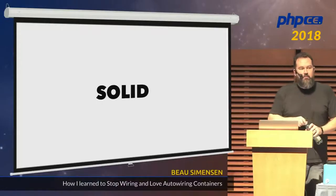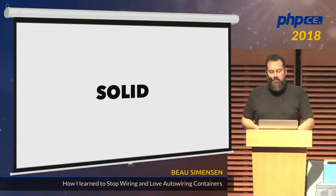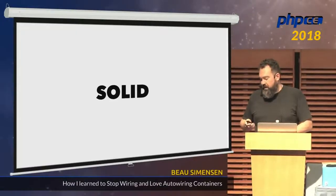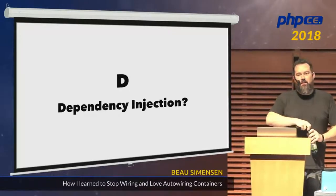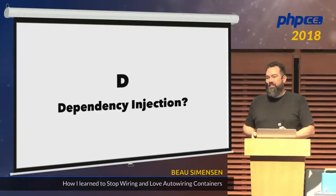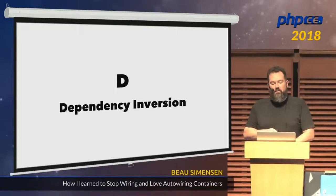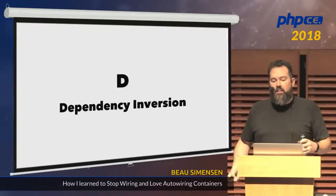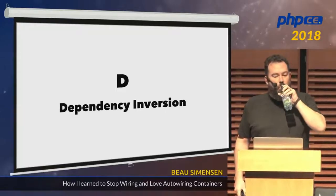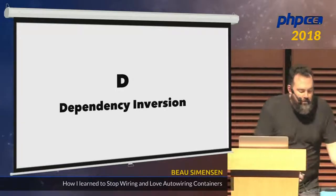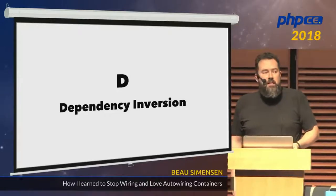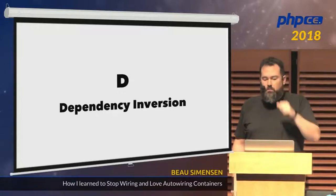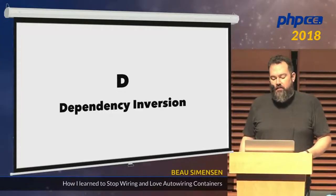The first thing we're going to talk about is SOLID. I've never actually talked on SOLID because I don't always remember what all the little bits mean. For example, I always assumed the D in SOLID is dependency injection — that's not actually the case. The D in SOLID is dependency inversion: the idea that high-level modules should not depend on lower-level modules. Both should depend on abstractions, and abstractions shouldn't depend on details. Details should depend on abstractions.